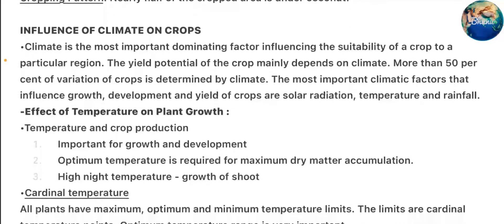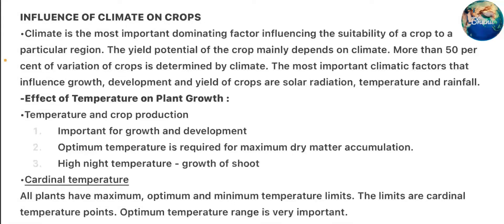Influence of Climate on Crops: Climate is the most important dominating factor influencing the suitability of a crop to a particular region. The yield potential of the crop mainly depends on climate, and more than 50% of the variation in crop yields is determined by climate. The most important climatic factors that influence growth, development, and yield of crops are solar radiation, temperature, and rainfall.